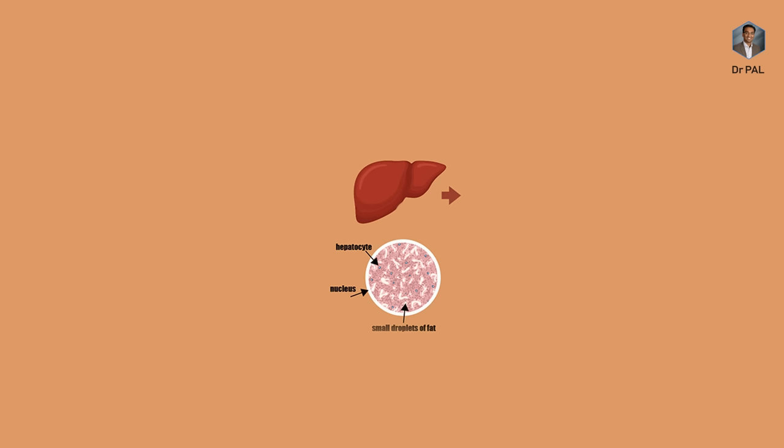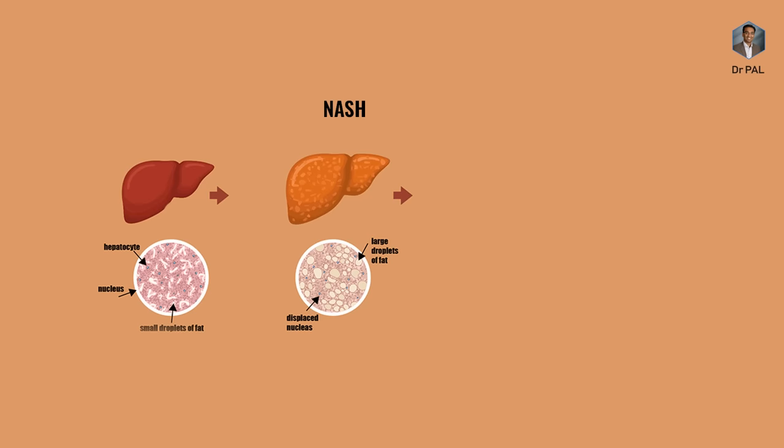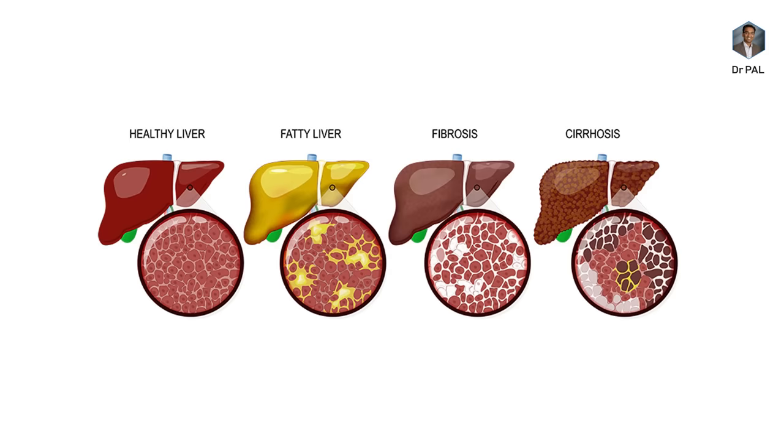When fat gets deposited in the liver: stage one — the liver gets big, we call it fatty liver. Stage two — the cells become inflamed, called NASH. Stage three — more fat accumulates with scar tissue formation, called fibrosis. Stage four — so much scar tissue that the liver will not work at all, a complete shutdown — we call that cirrhosis. Think of it like getting progressively more angry until you completely shut down — that's how the liver progresses through these stages.